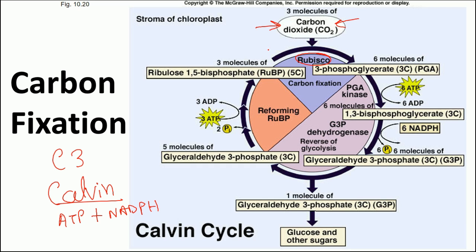If the process begins with three molecules of RuBP and three molecules of CO2, that gives us eighteen total carbons. This produces six molecules of 3-phosphoglycerate, which also accounts for eighteen carbons. An important part of understanding the Calvin cycle is tracking the carbon calculations. The six molecules of 3-PGA are then converted to 1,3-bisphosphoglycerate by donating a phosphate group from ATP, catalyzed by phosphoglycerate kinase.